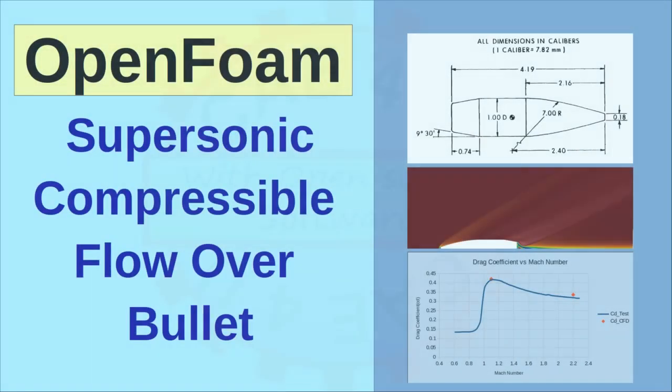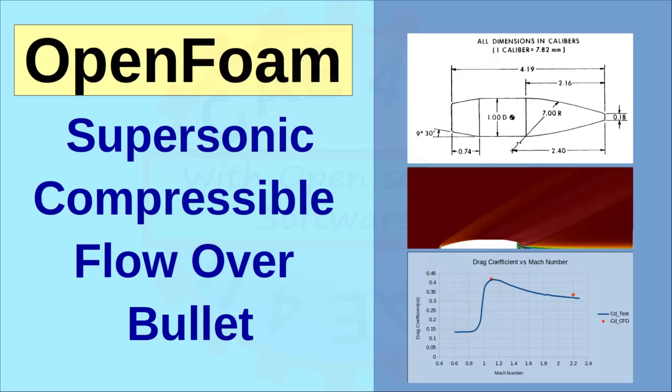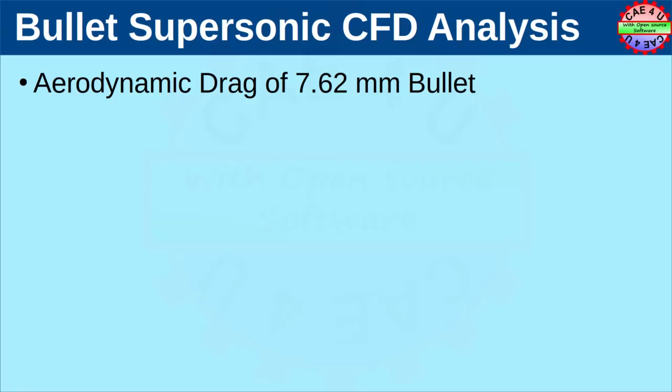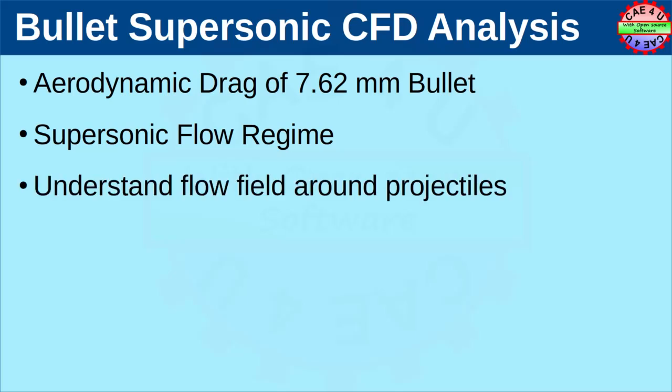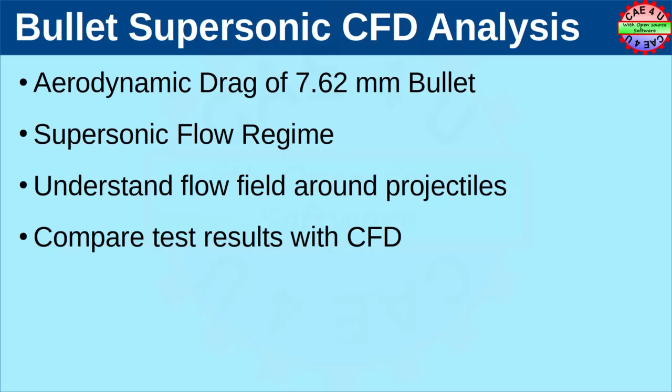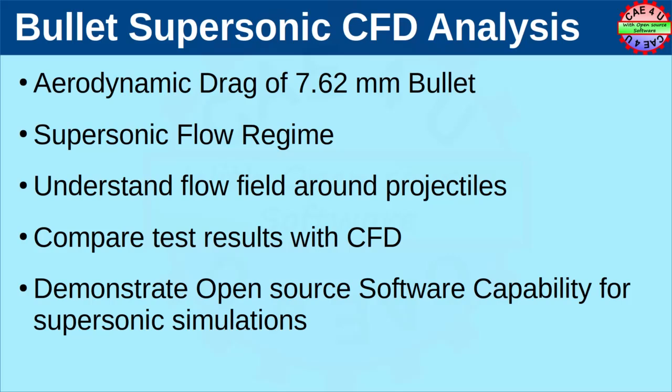Hello viewers, welcome to CAE4U. In this video we will see supersonic compressible flow over a bullet using OpenFOAM. Our interest is to calculate the aerodynamic drag of a projectile traveling at supersonic speed. In this case the geometry will be a 7.62 mm bullet. The simulation will be carried out in the supersonic flow regime. The requirement is to understand the flow field around the projectile and compare the test results with CFD results. We also feel that this work can demonstrate open source software capability for performing supersonic flow simulations.